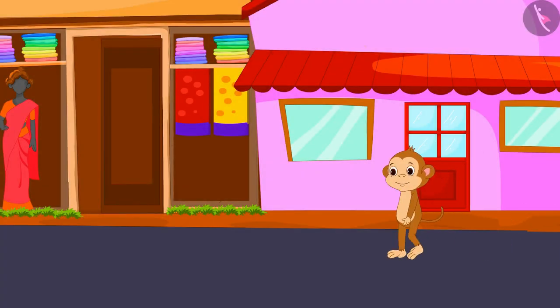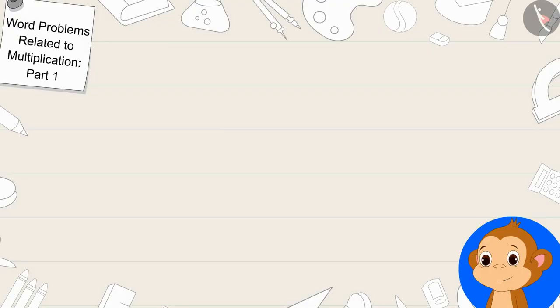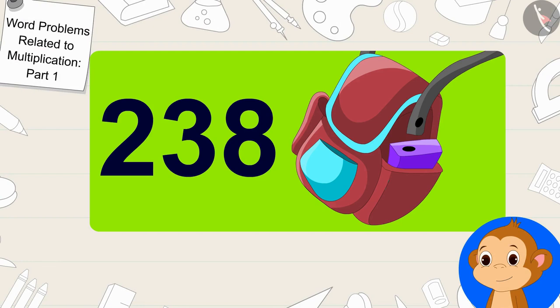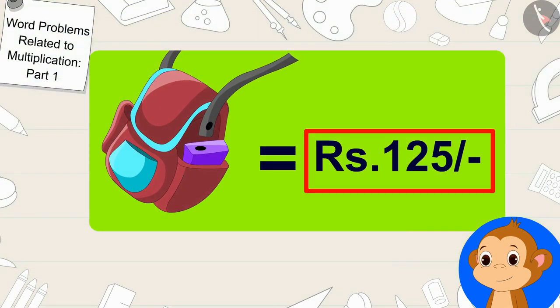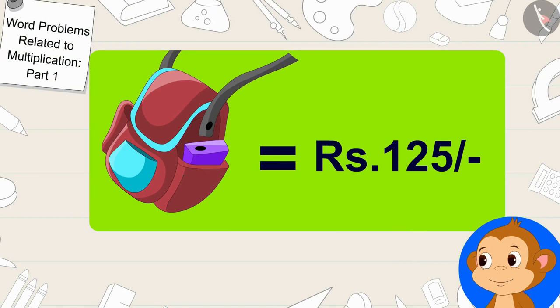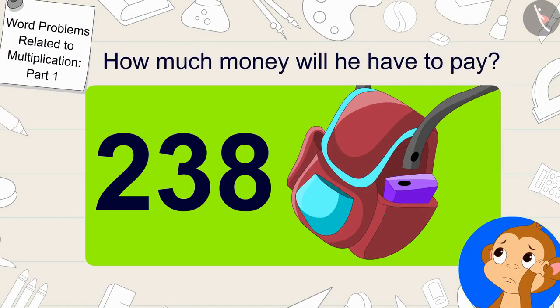Babban reached the city to buy some items for his new shop. First, Babban went to buy 238 bags. The cost of each bag is 125 rupees. Now Babban is thinking, how much money will he have to pay?